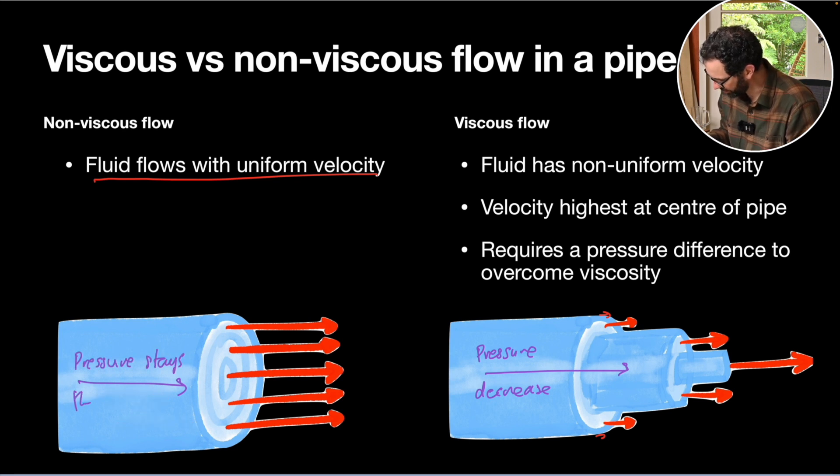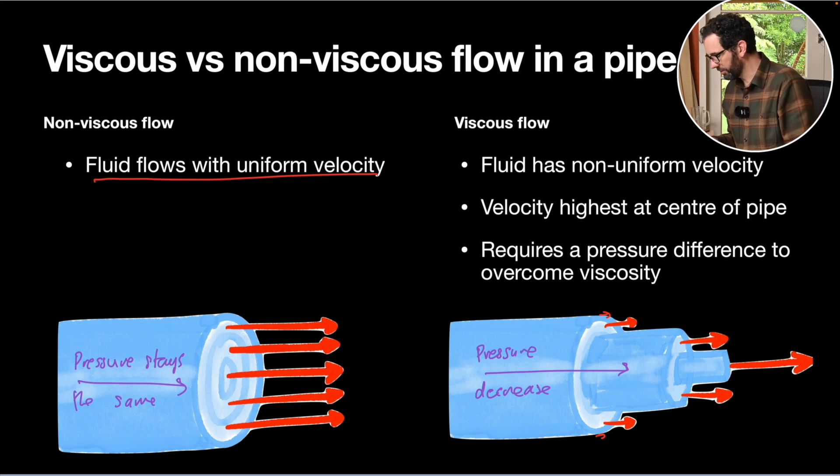With our non-viscous situation, this was governed by Bernoulli's equation and the pressure would stay the same if our velocity and our area stayed the same. Whereas for a viscous fluid, the pressure is going to decrease due to this friction, internal friction inside the fluid as it's flowing.